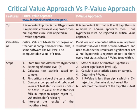There are six steps in the critical value approach: step one — state null and alternative hypothesis; step two — select significance level alpha; step three — calculate test statistic based on sample; step four — find critical value of the test statistic; step five — compare computed and tabulated values of the test statistic such as z-test or t-test; if the value falls in the rejection region, reject H-naught, otherwise do not reject.